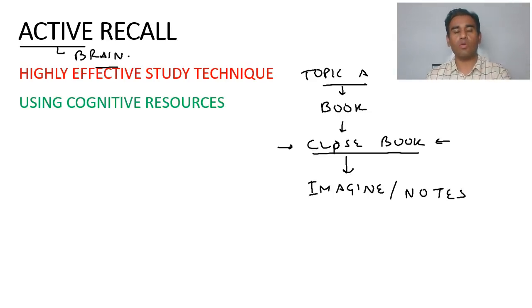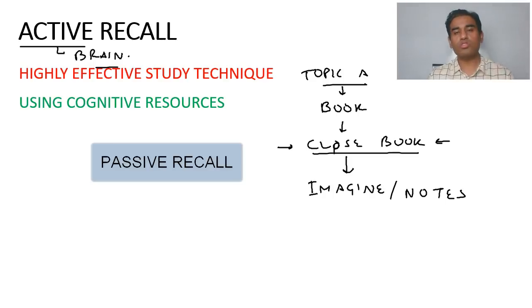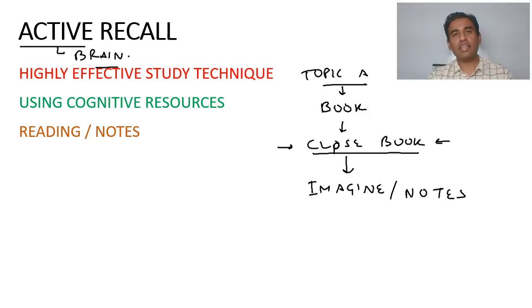But what we used to do till now was passive recall. Most of us used to do passive recall. What is that passive recall? We open the book, we try to read it, then if we are not able to understand, we try to reread it again and again. Or we take a highlighter, we try to highlight, or we try to make notes by opening the book. That is all passive recall. You are using your brain but not in an efficient manner in which you can do in this way, that is in active recall.